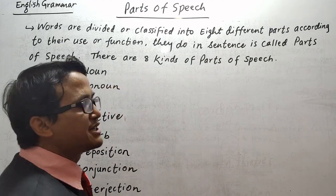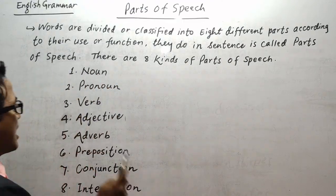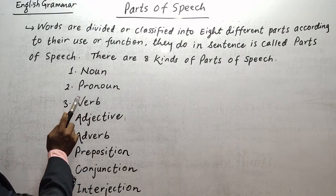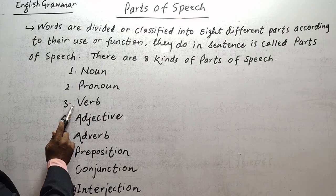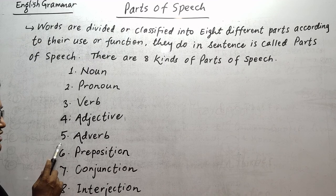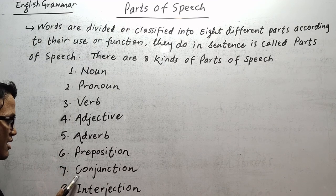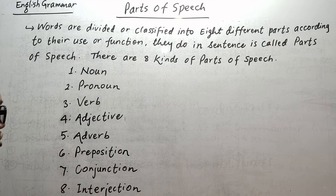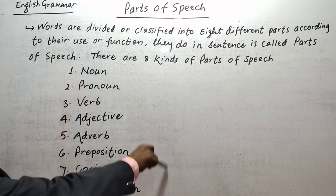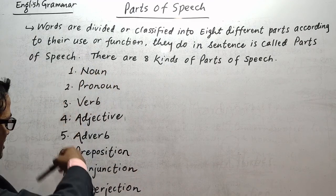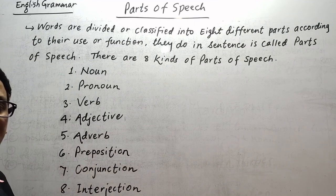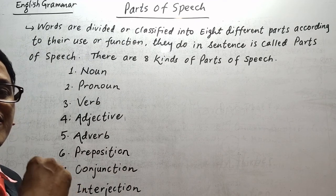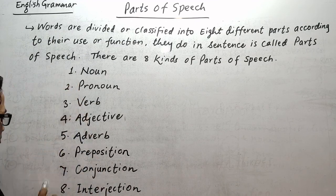There are eight kinds of parts of speech. They are noun, pronoun, verb, adjective, adverb, preposition, conjunction, and interjection. To know grammar and to know English properly, we need these things. These parts are very important in English to generate any kind of sentence. We also need these portions, so we have to understand them well.